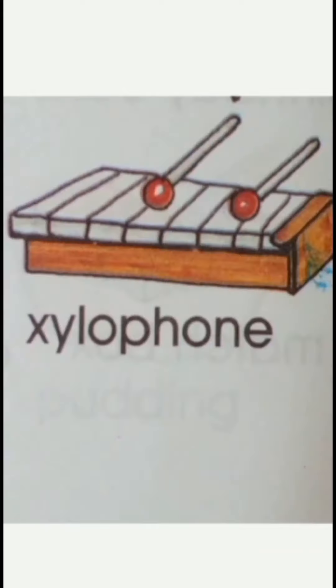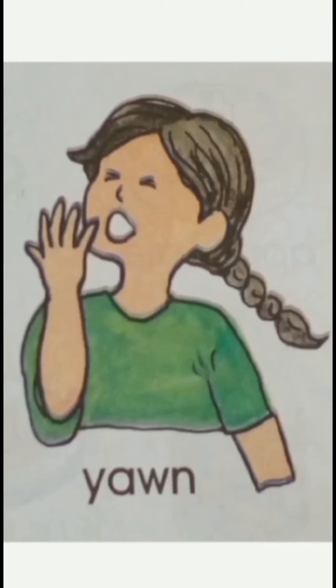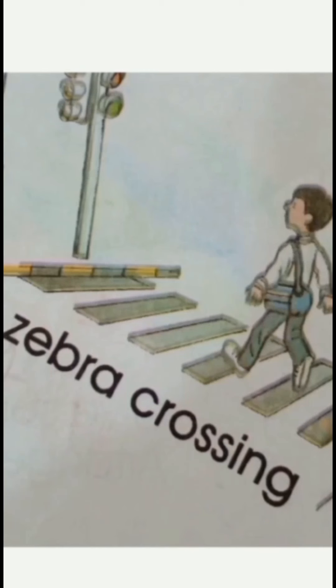V for vest, W for window, X for zaglophone, Y for yarn, Z for zebra crossing.